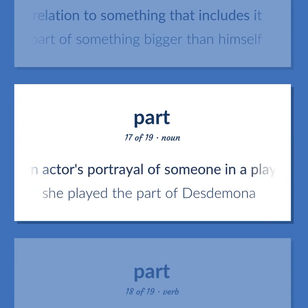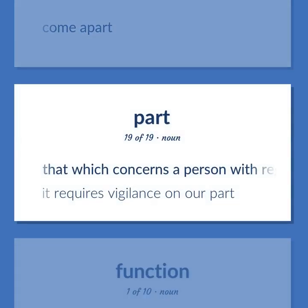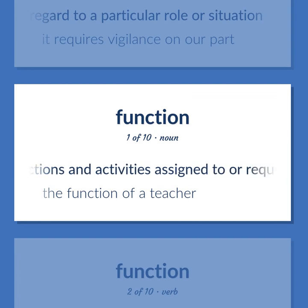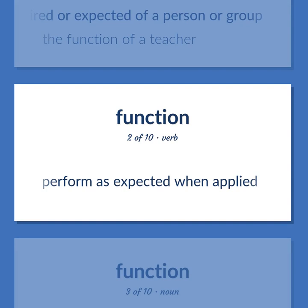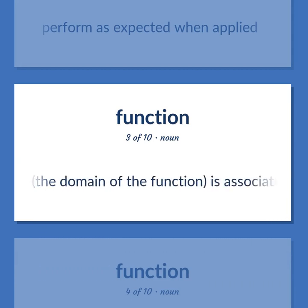Part: an actor's portrayal of someone in a play. Example: She played the part of Desdemona. Come apart. That which concerns a person with regard to a particular role or situation. Example: It requires vigilance on our part. Function: the actions and activities assigned to or required or expected of a person or group. Example: The function of a teacher. Perform as expected when applied. Mathematics: a mathematical relation such that each element of a given set (the domain of the function) is associated with an element of another set (the range of the function).